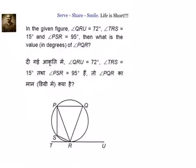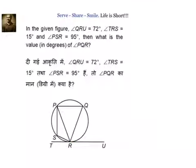In the given figure, angle QRU is 72 degrees, angle TRS is 15 degrees, and angle PSR is 95 degrees. What is the value of angle PQR? We should be able to solve this in exactly 10 seconds once we realize that PQRS is a cyclic quadrilateral and angle PSR is 95 degrees. In a cyclic quadrilateral, opposite angles are supplementary, so angle PQR equals 85 degrees.